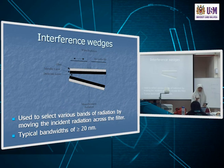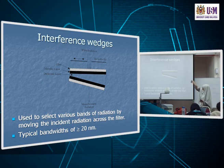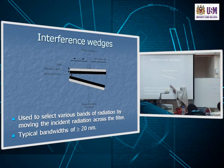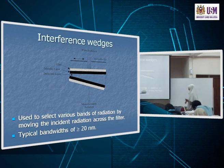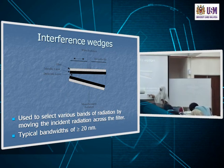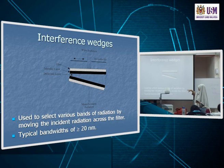Another kind of wavelength selector in the same category is interference wedges. It still has a dielectric layer, metallic layer, and glass layer with white radiation coming through, but the difference is it has a movable slit. You get monochromatic radiation — mono meaning one wavelength versus polychromatic meaning many. Typical effective bandwidth is about 20 nanometers.